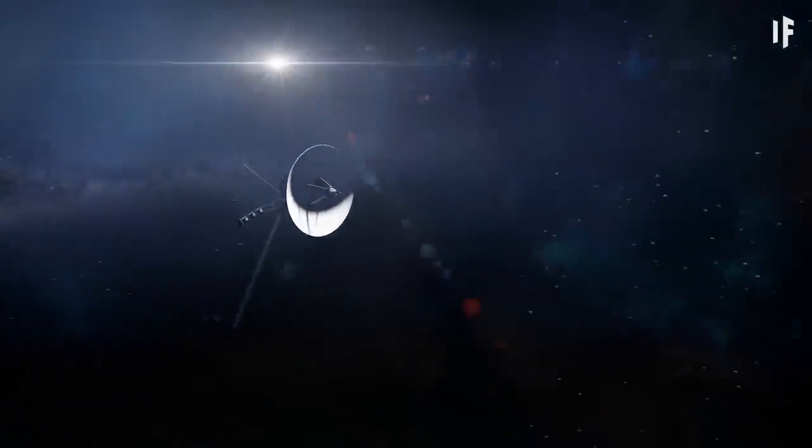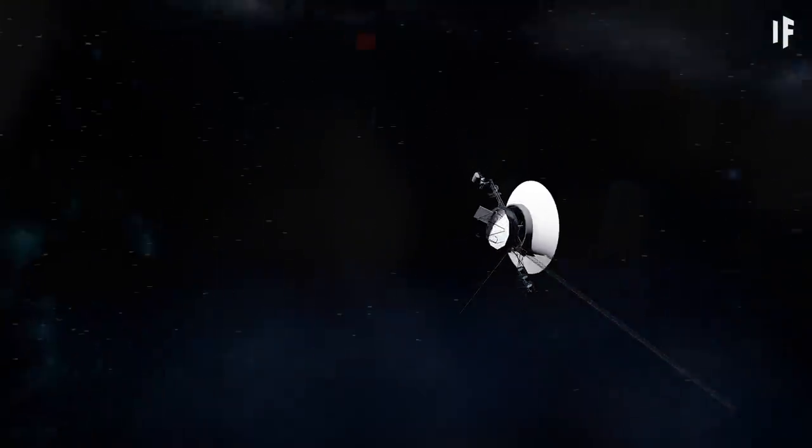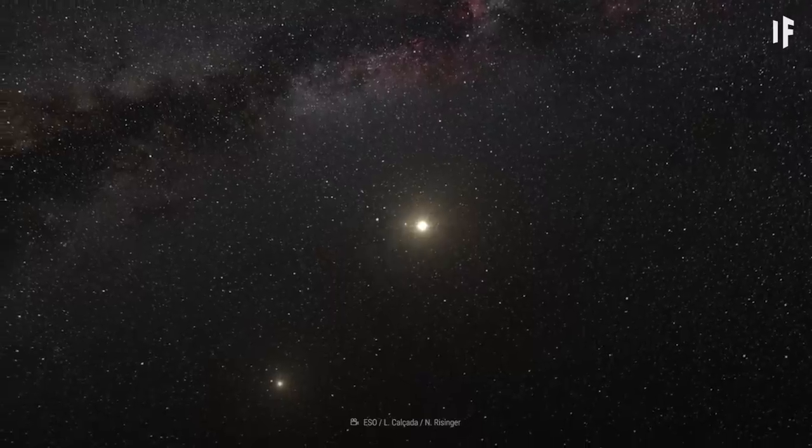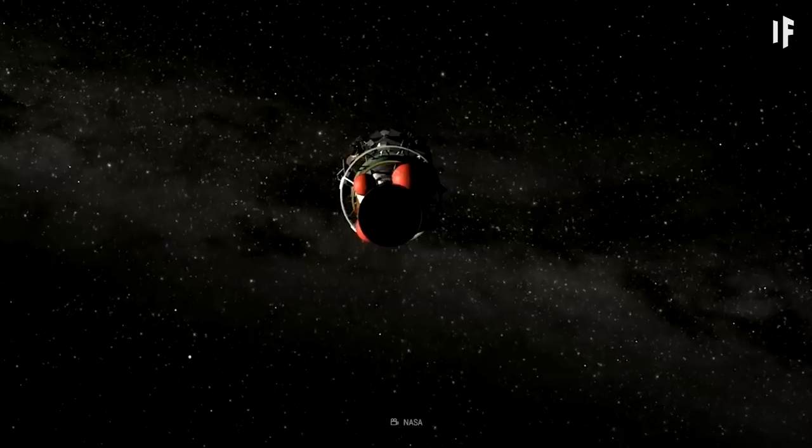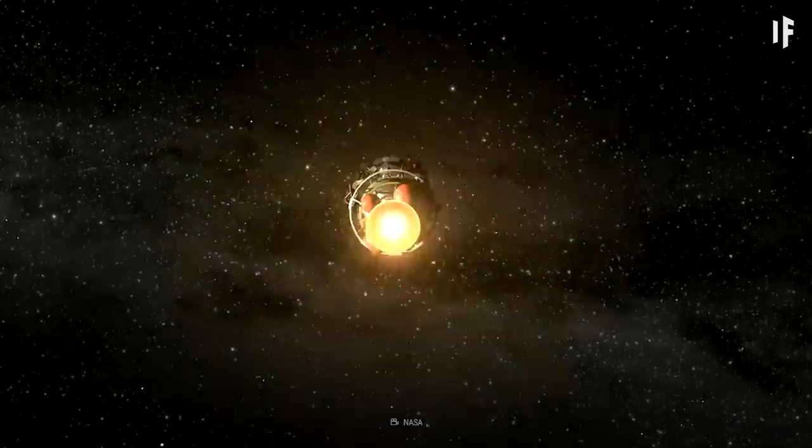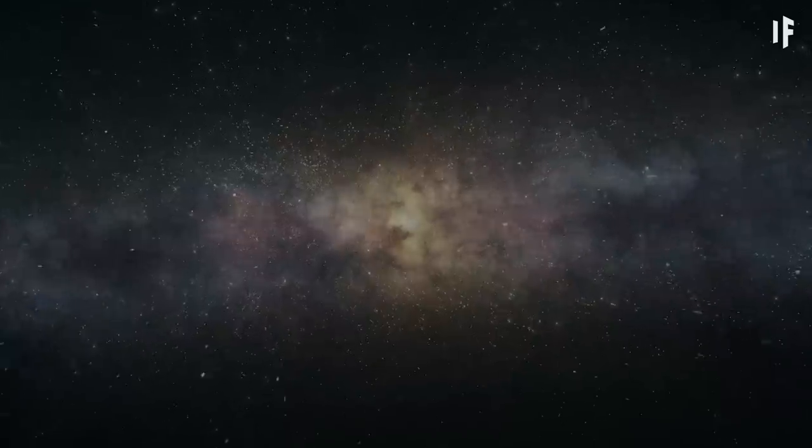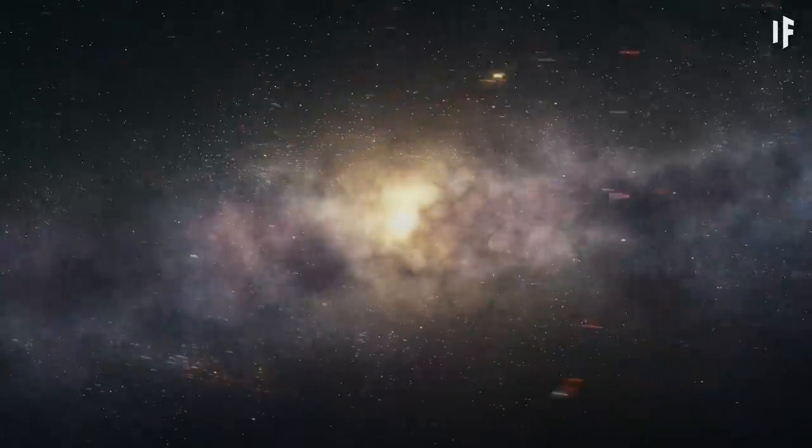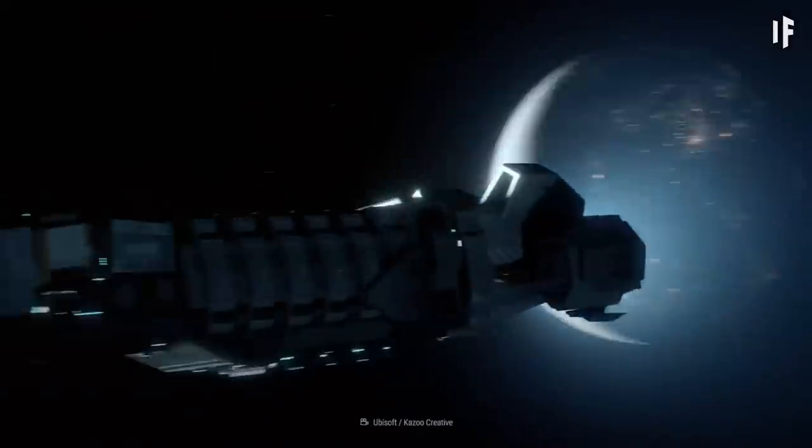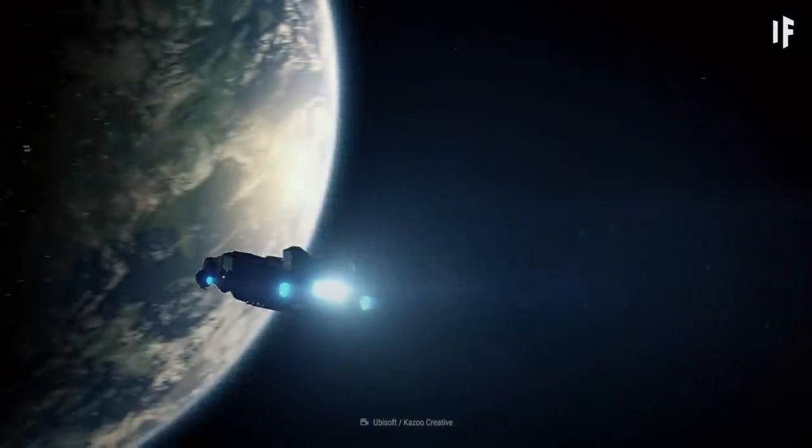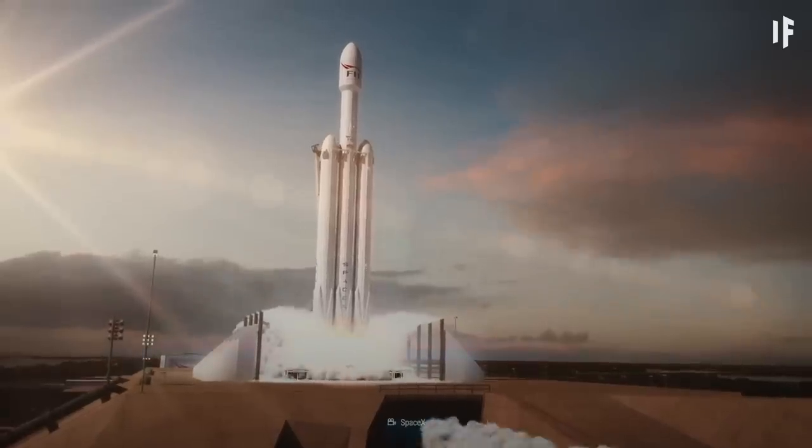If we jumped into the fastest spacecraft ever built, it would take us over 70,000 years to get to our neighboring star system, Alpha Centauri. Even if we could accelerate a spaceship to 99% the speed of light, over 26,000 years would pass until we arrived at the center of our own galaxy, and another 2 million years until we set foot in the nearest neighbor, the Andromeda galaxy. How could we go about expanding our civilization into space if we're so terribly slow?